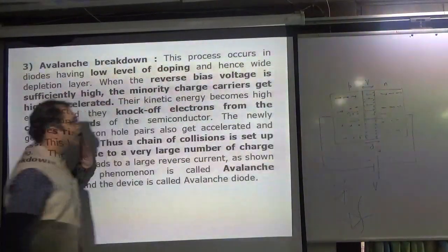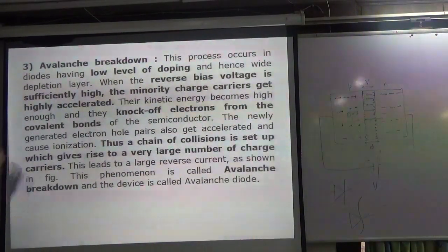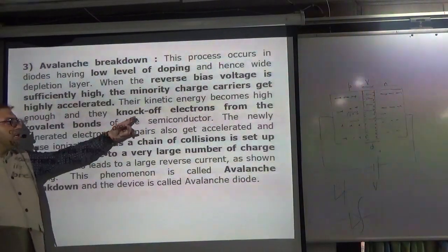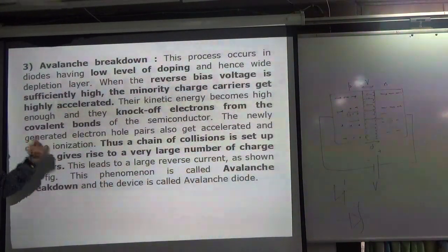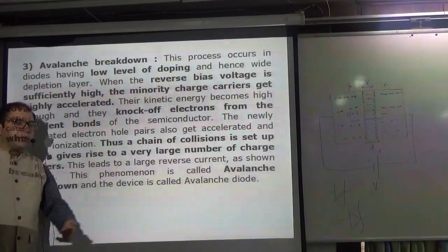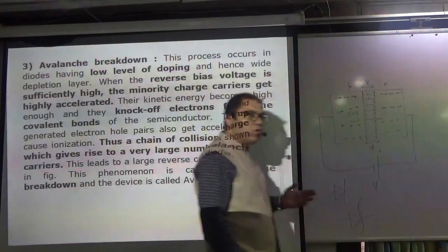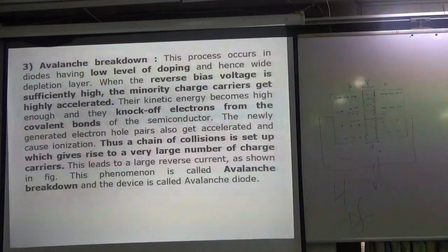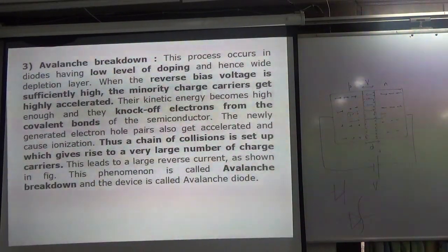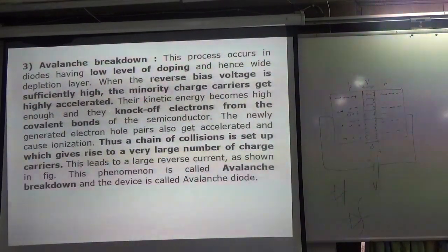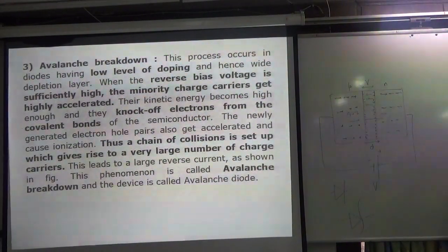When there is a low level of doping with sufficiently high reverse biasing applied, the minority charge carriers are highly accelerated, and as they move they knock off electrons from the covalent bonds of the semiconductor. The newly generated electron-hole pairs also get accelerated and move, setting up a chain of collisions, and a very large number of charge carriers start to flow in the junction. So there are two types of breakdown: the first is Zener breakdown and the second is avalanche breakdown.